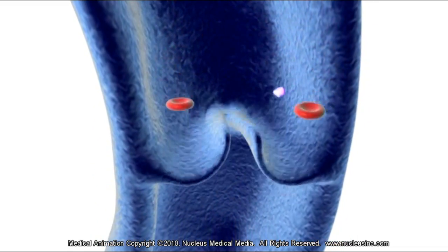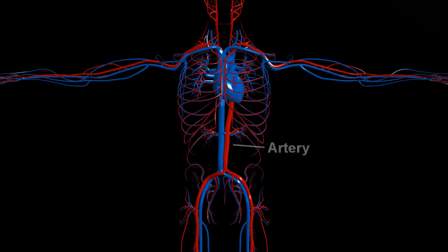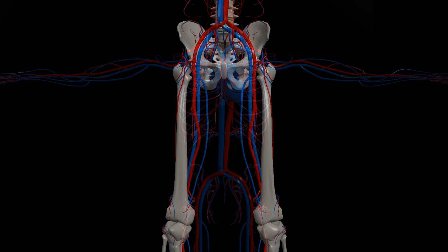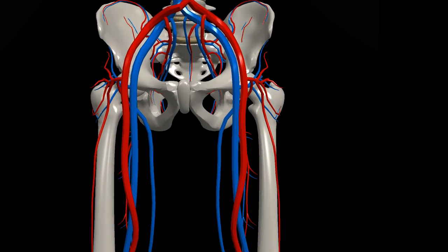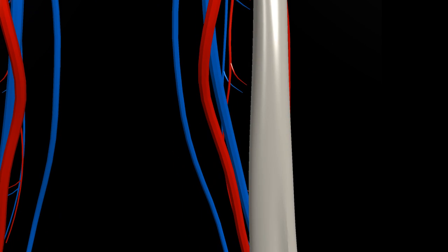In most circumstances, the veins and arteries run together in the body. There are exceptions in our extremities, however. As you can see, there is a vein running adjacent to the main artery in the leg.